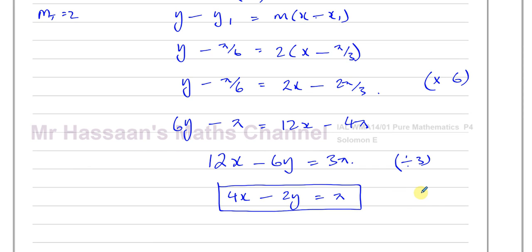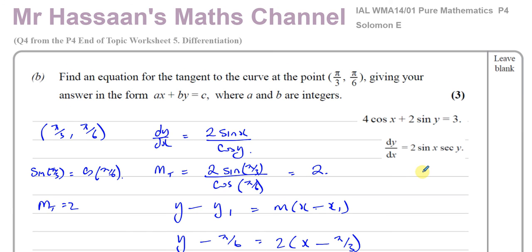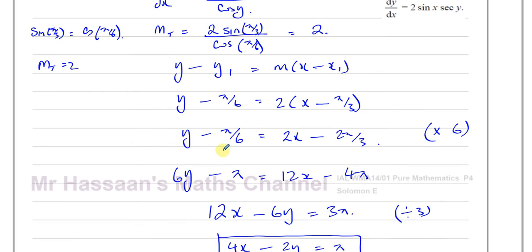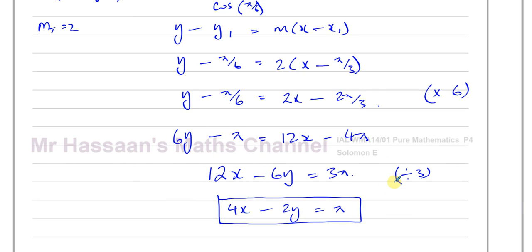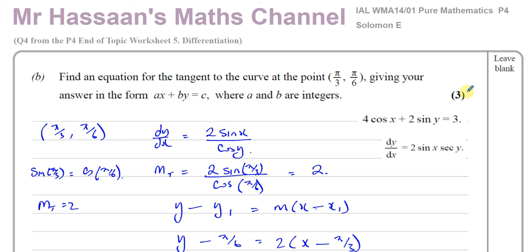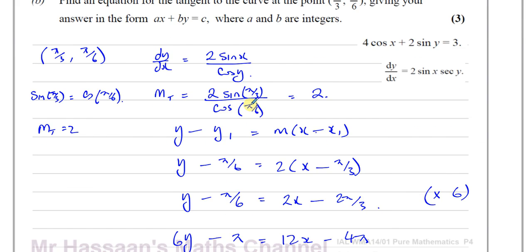That's the answer for this question — number 4 from the endotopic worksheet and number 2 from the Solomon E paper. Other questions related to the Solomon E paper from the C4 collection can be found in the playlist. Other questions from this endotopic worksheet on differentiation from the P4 collection can be found in another playlist, along with other P4 differentiation questions. Thank you for watching and see you soon.